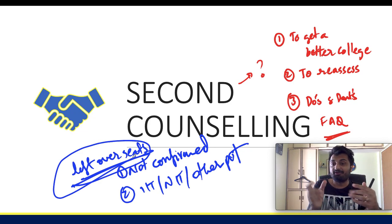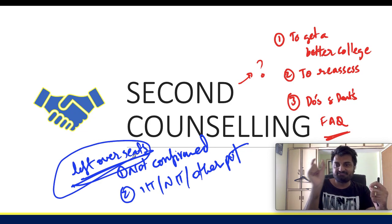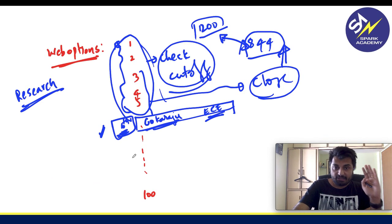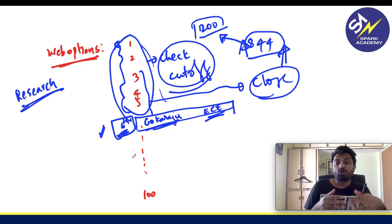So, whatever are the remaining seats, just before the 2nd counseling, they will issue a notification. So, once they issue a notification, you know, okay, this college, this branch, these many seats are left. So, accordingly, you can give your options again.